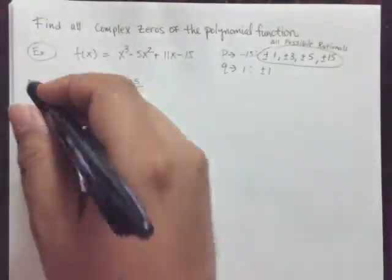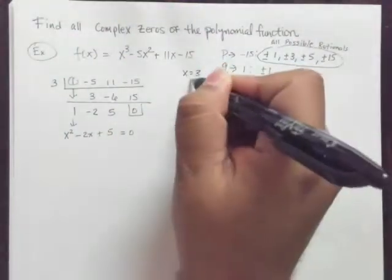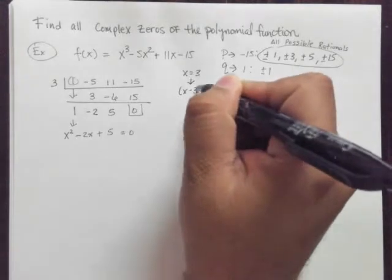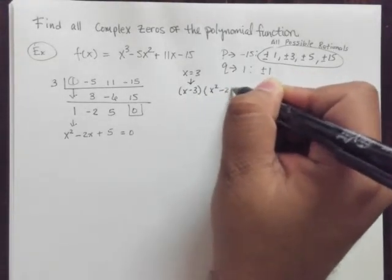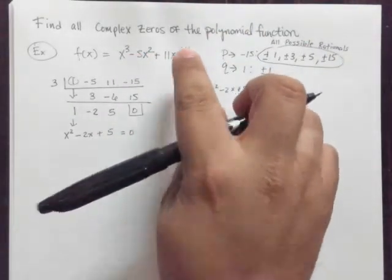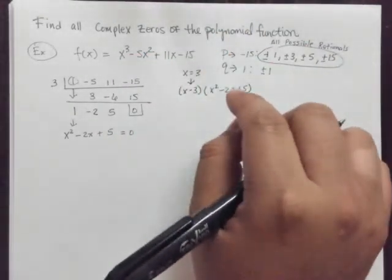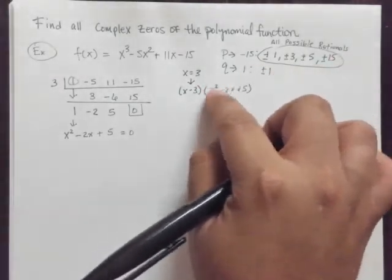So now that I have that, I knew that x equals 3 was one of the zeros. And that came from x minus 3. So x minus 3 times x squared minus 2x plus 5 will actually give me this polynomial right here. But my next task is to figure out what this is right here.